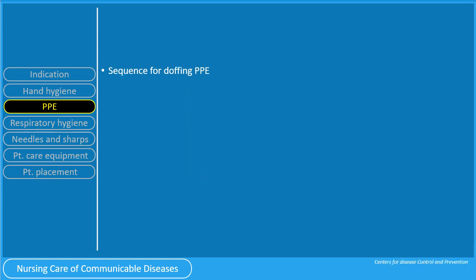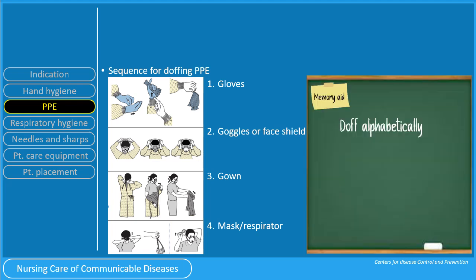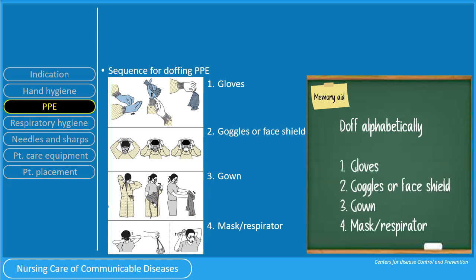For doffing PPE, the proper sequence is: first remove the gloves, then the goggles, the gown, and then the mask or respirator. I use the mnemonic 'doff alphabetically' to remember the sequence. First, the three Gs — GLO comes first in the alphabet before GOG, before GOW — therefore gloves, goggles, and then gown. And lastly, the letter M for mask.